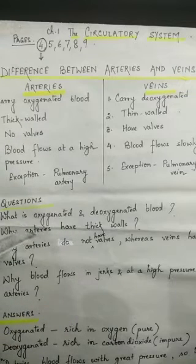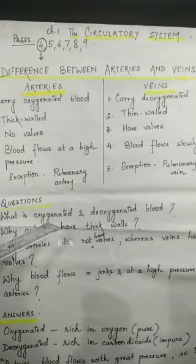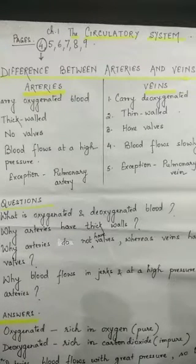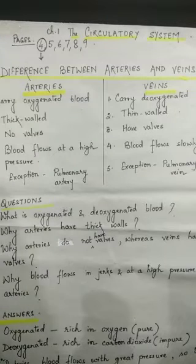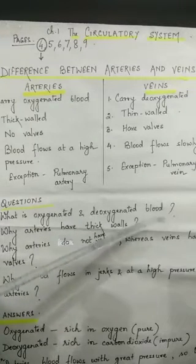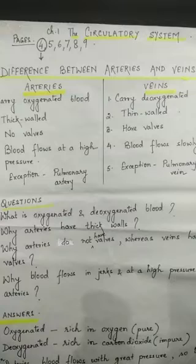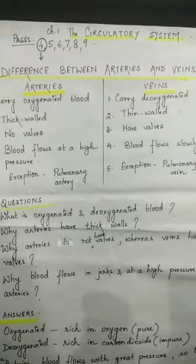Now let us come to some questions. What is oxygenated and deoxygenated blood? Oxygenated blood means blood which is rich in oxygen, or we can say pure blood. Deoxygenated blood means blood which has more carbon dioxide, or we can say impure blood.